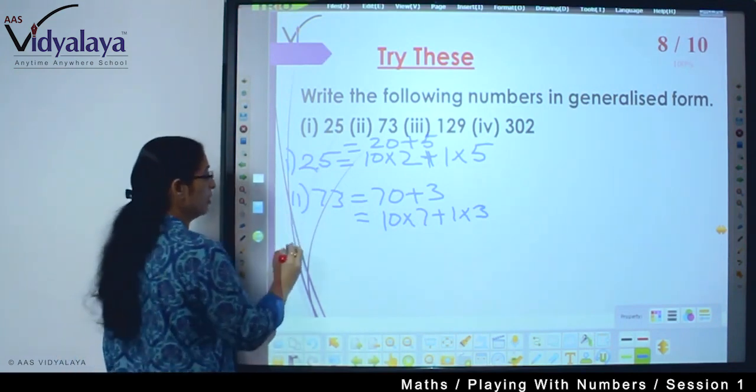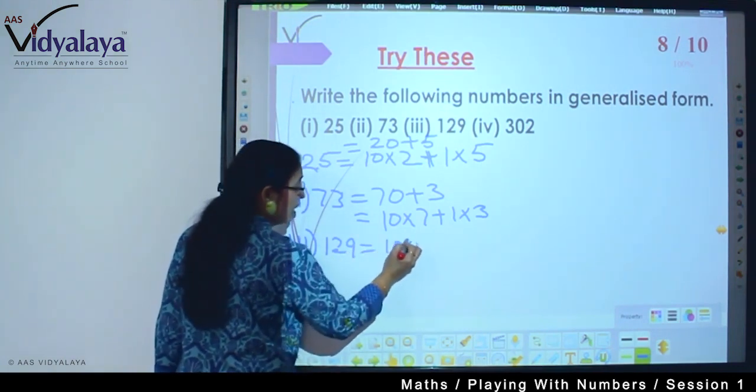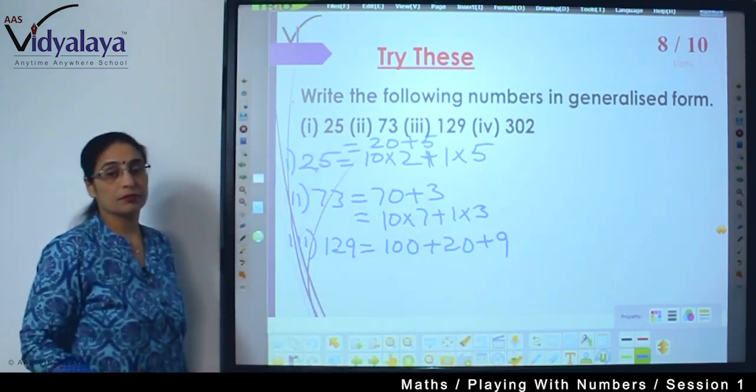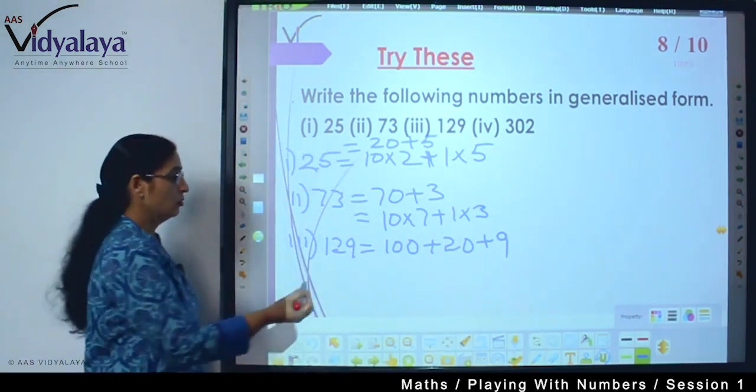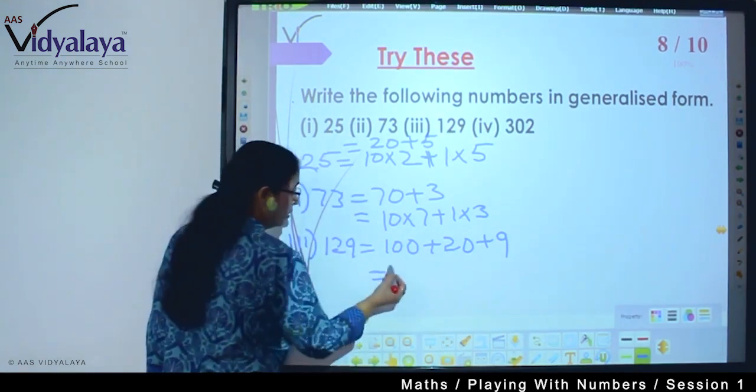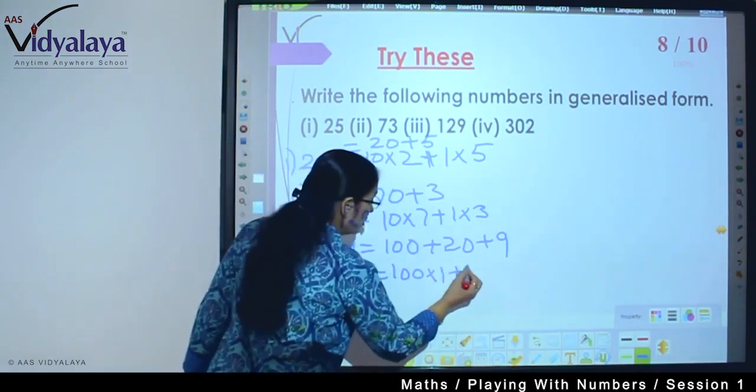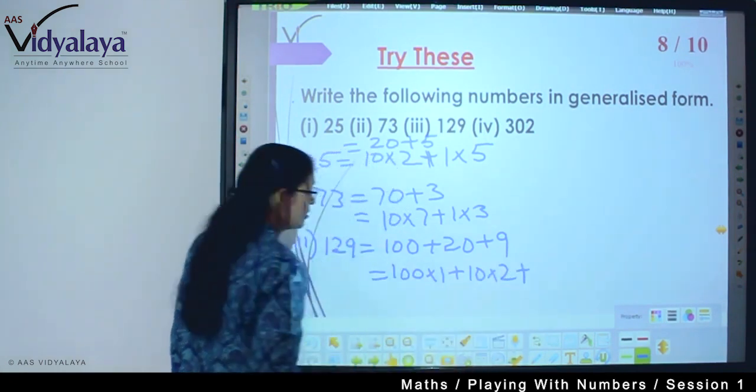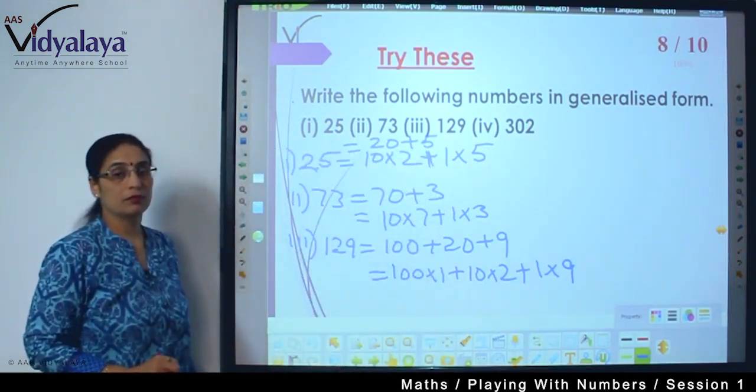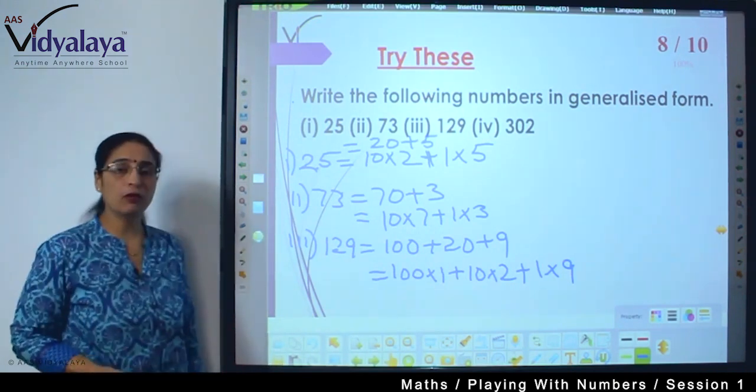One more example I'll show you about 129. 129 it can be written as 100 plus 20 plus 9. As we are speaking we write it, so this means it becomes 100 into 1 plus 10 into 2 plus 1 into 9. Done? So can you do the fourth one?